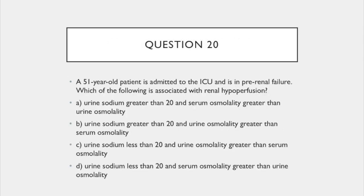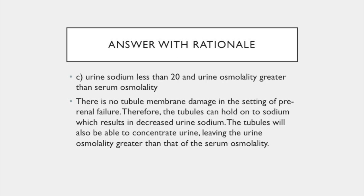Question 20. A 51-year-old patient is admitted to the ICU and is in pre-renal failure. Which of the following is associated with renal hypoperfusion? A. Urine sodium greater than 20 and serum osmolality greater than urine osmolality. B. Urine sodium greater than 20 and urine osmolality greater than serum osmolality. C. Urine sodium less than 20 and urine osmolality greater than serum osmolality. Or D. Urine sodium less than 20 and serum osmolality greater than urine osmolality. The answer is C. In pre-renal failure, there is no tubular membrane damage, therefore the tubules can still hold on to sodium, resulting in decreased urine sodium. The tubules will also be able to concentrate urine, leaving the urine osmolality greater than that of the serum osmolality.